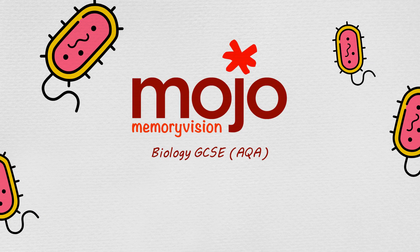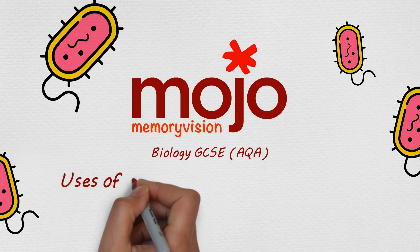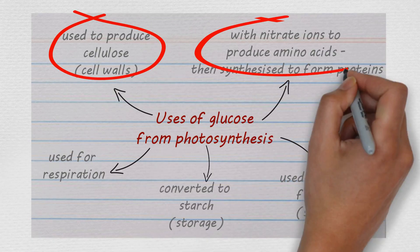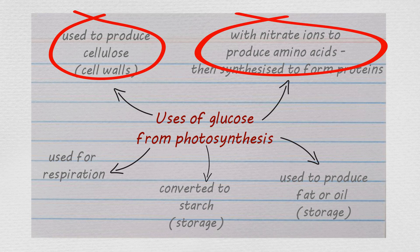It's Mojo memorization time again, and in this one we're going to memorize how glucose from photosynthesis is used in plants. There are two things you need to recall highlighted here on the screen. All the rest of the things are covered in other Mojo moments.